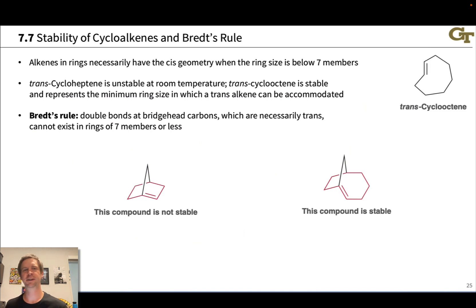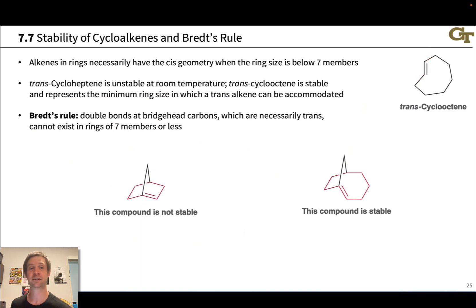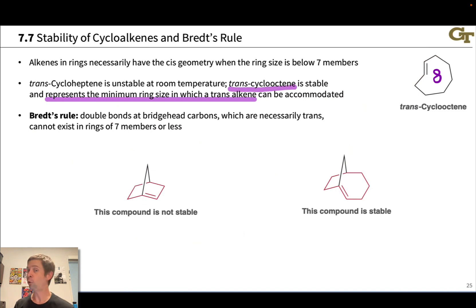One more point concerns alkenes in bridged ring systems and Bredt's rule. For rings with seven atoms or fewer, any alkene in the ring necessarily has cis geometry, since a trans alkene in such a small ring would be severely strained. At seven and especially eight members, a trans alkene can be accommodated. Trans-cyclooctene, for example, is a surprisingly stable species at room temperature and represents the minimum ring size for a trans alkene.